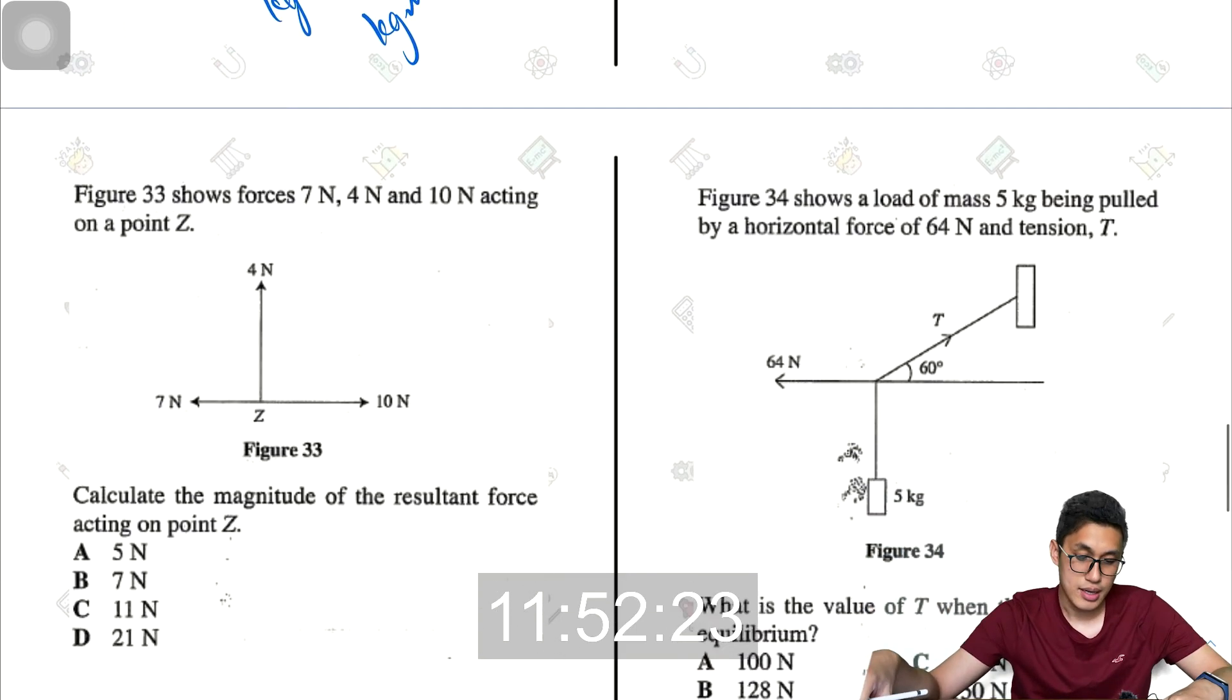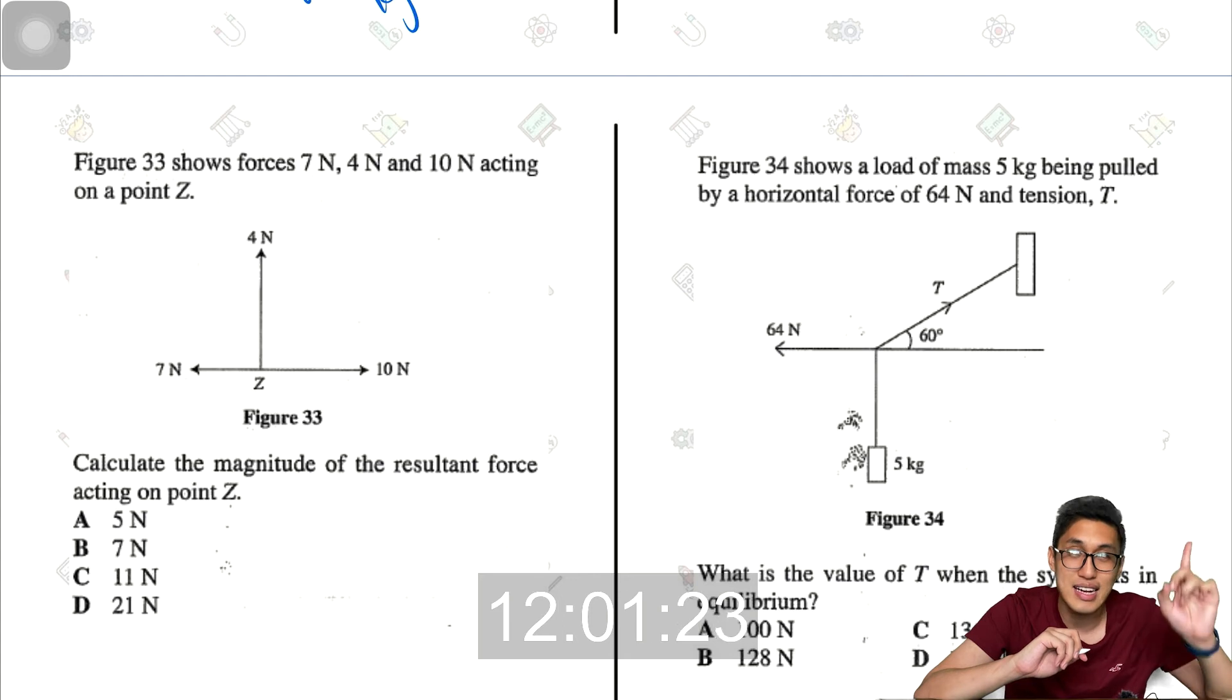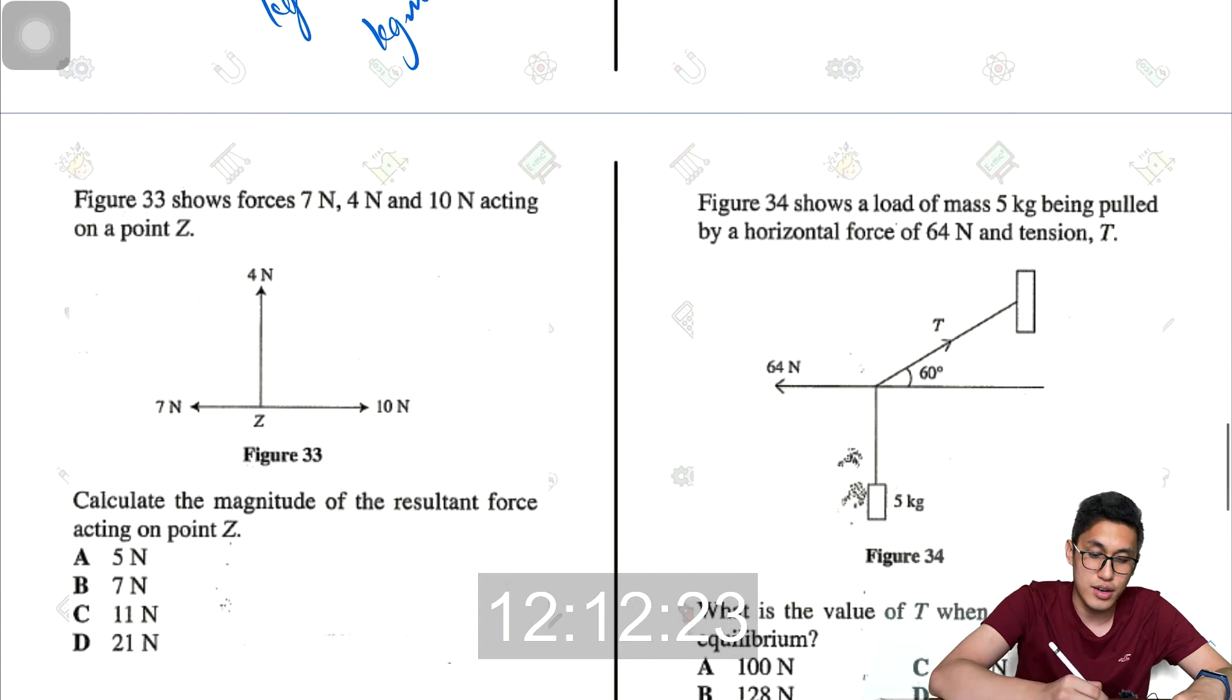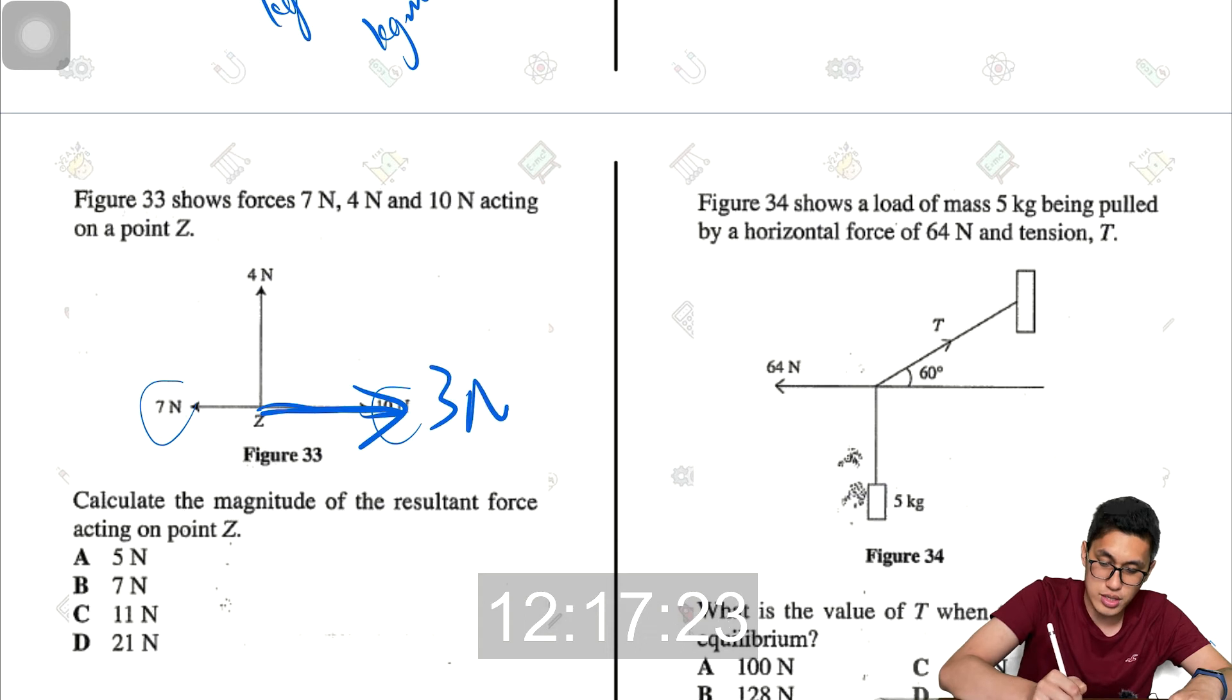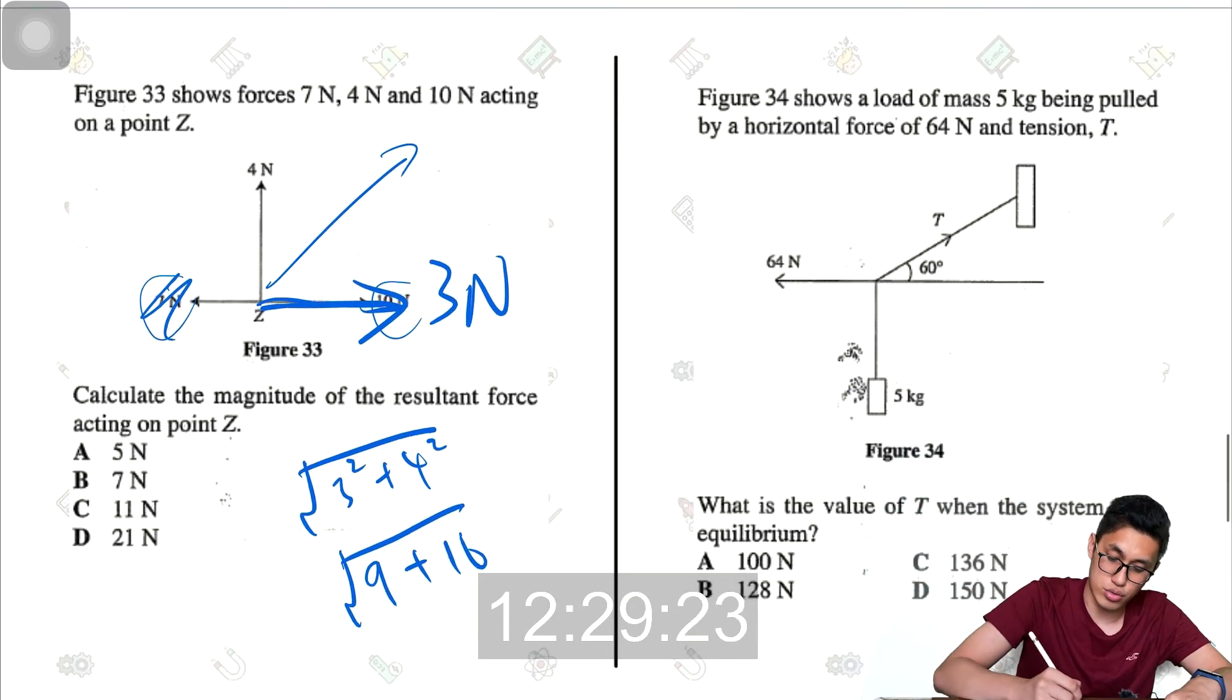The next question, calculate the magnitude of the resultant force. If you haven't watched the video on resultant forces, remember to go and watch that. I'll put a link up in the video, and I'll also put a link in the description below. So here, I will first find the resultant force on the horizontal axis. So 7 on the left and 10 on the right. That will give me a resultant force of 3 newtons to the right. And so now I just have to resolve 3 and 4. So that would be square root of 3 square plus 4 square. That's square root of 9 plus 16. So square root of 25. That is 5 newtons.